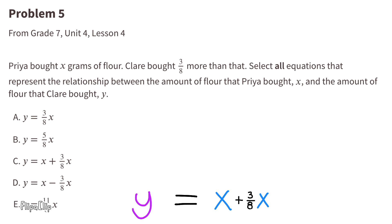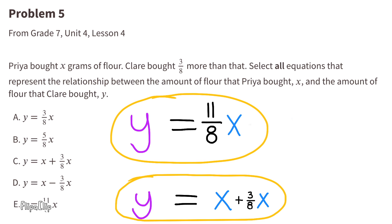Since 1 X is also 8 eighths X, then Y could also equal 8 eighths X plus 3 eighths X, which would be 11 eighths X. So, Y could equal 11 eighths X, and Y could equal X plus 3 eighths X.